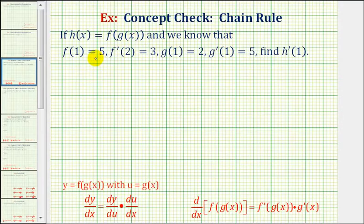and we also know that f of one equals five, f prime of two equals three, g of one equals two, and g prime of one equals five, we want to find h prime of one, which means we need to find the derivative of this composite function, which requires the chain rule.